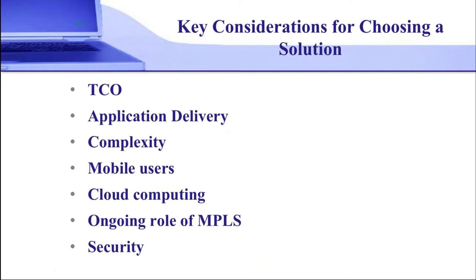I want to wrap up with key considerations. Different SD-WAN solutions come with different cost elements, so I suggest you look at a TCO — total cost of ownership — over a period such as three years, and include all costs: hardware, software, transmission. If any of your solutions are DIY, one common trap is not including the personnel costs for all the planning, designing, implementing, and management. That cost is not free. So if you're doing a comparison, do a three-year TCO and include all costs, including labor.